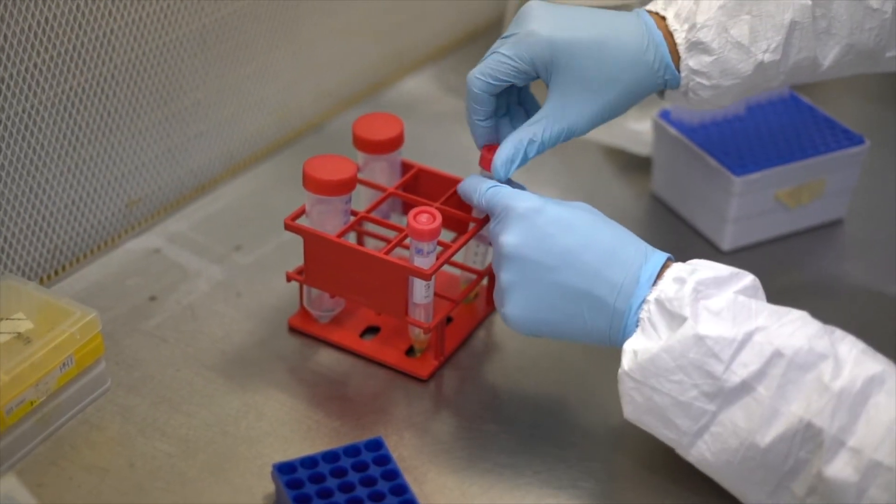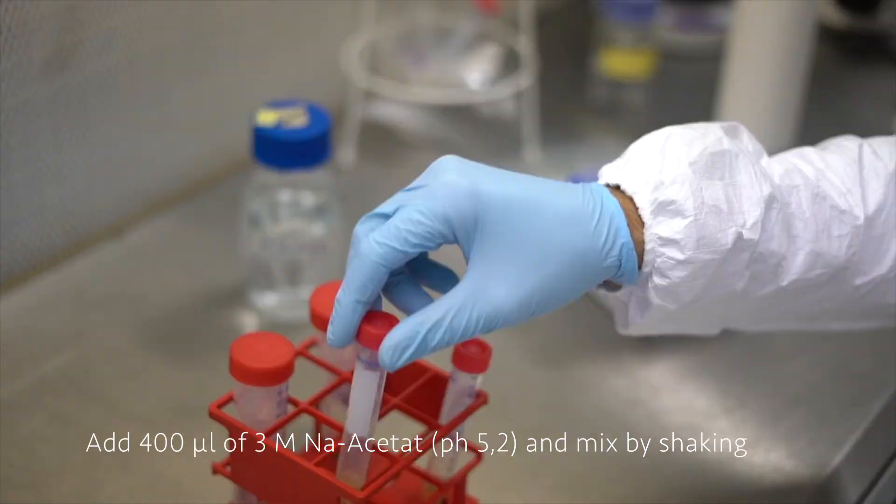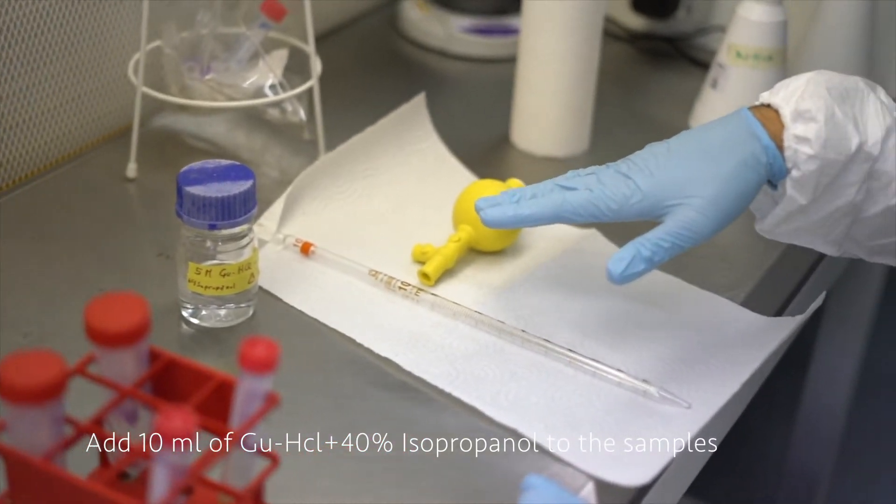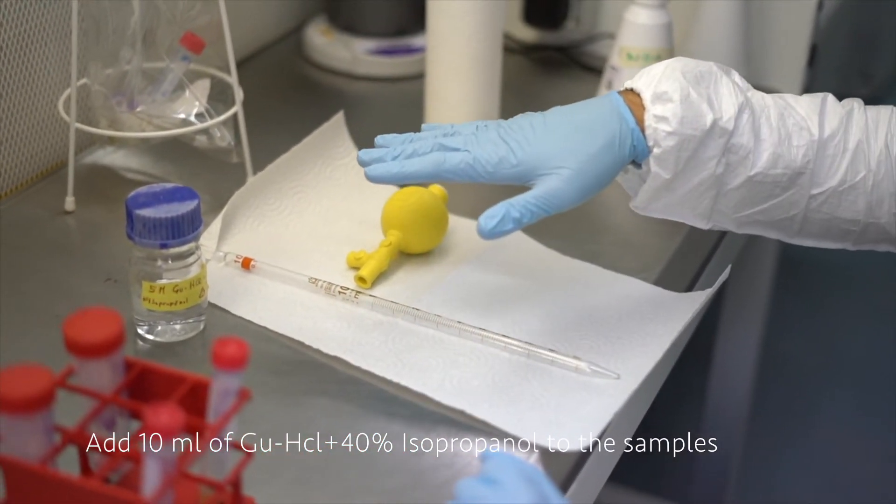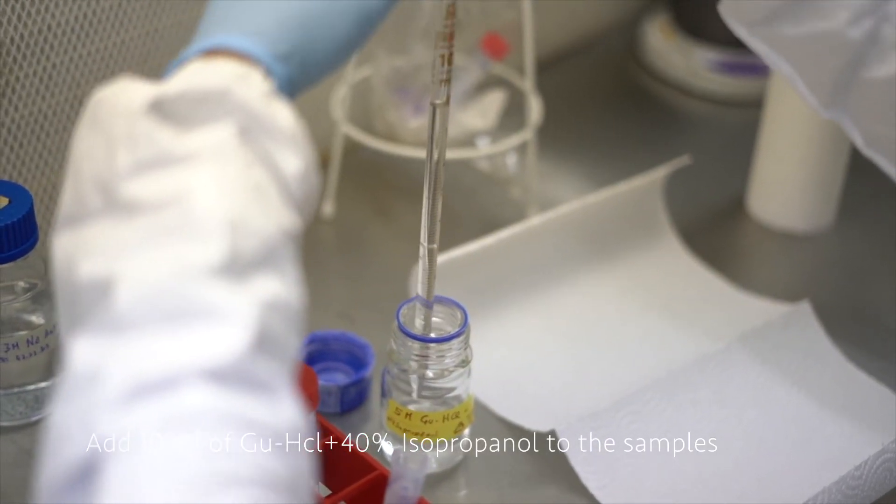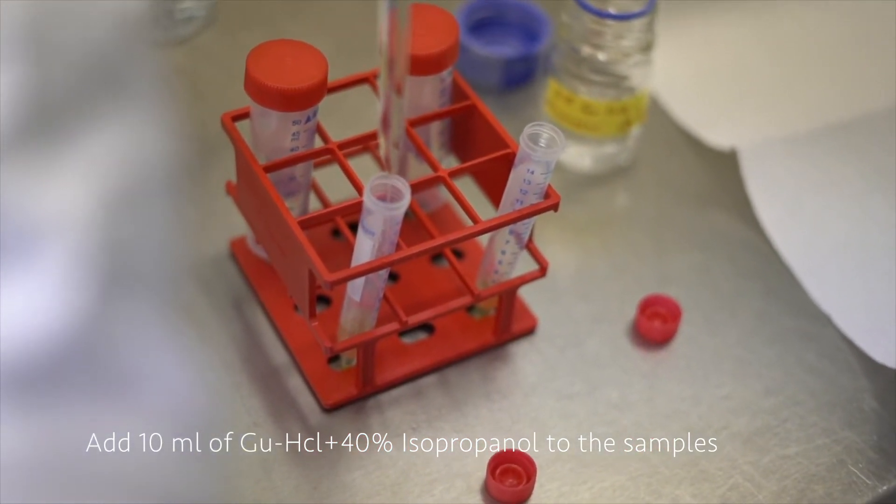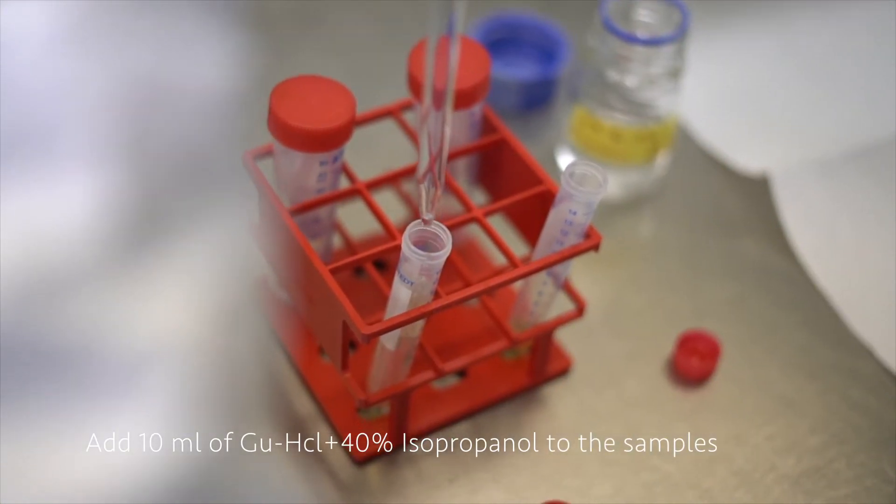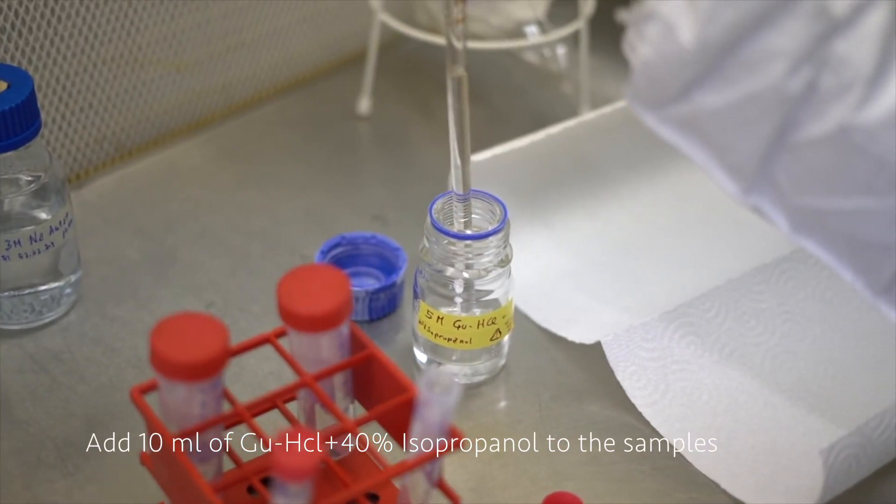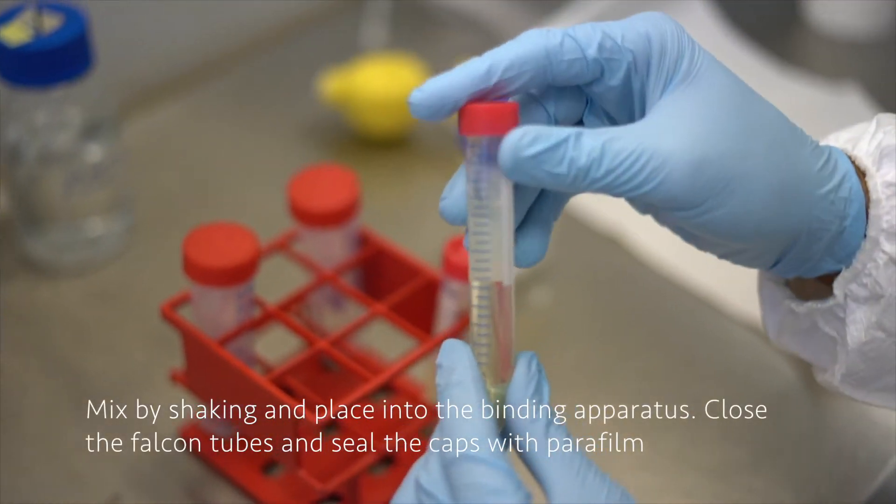Now we have to add 400 microliters of sodium acetate to the samples first, mix them shortly, and then add 10 milliliters of the binding buffer. For that I'm going to use the serological pipette. We need to add 10 milliliters, quite a big amount, and a pipette ball.